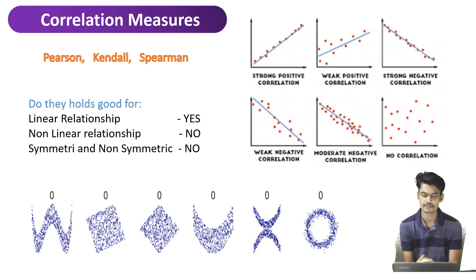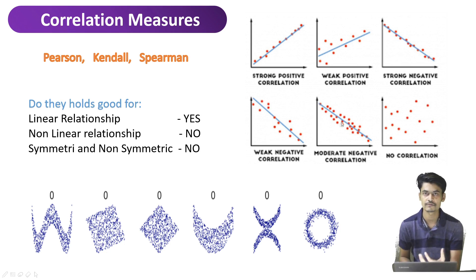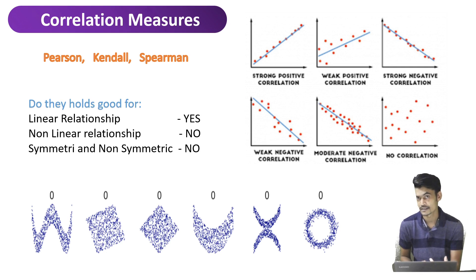We have Pearson, Kendall, and Spearman correlation coefficients for linear data, where these only work for numerical data. As you can see in the figure, we can get a strong positive correlation, a weak positive correlation, a weak negative correlation, or moderate negative correlations. The value varies from minus one to one. If it is more towards minus one, it's negatively correlated; if towards one, it is positively correlated; if it is around zero, there is no correlation at all. That's how we interpret it.